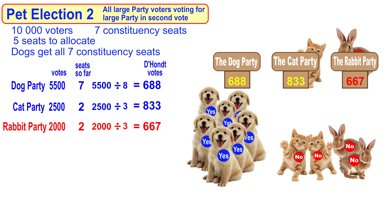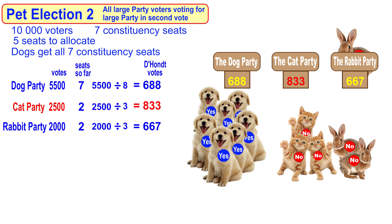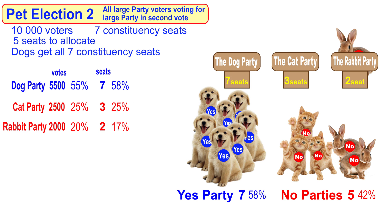The last seat goes to the cat party with the largest vote. Looking at how it worked out: the dog party got 55% of the vote and gained 58% of the seats. The cat party on 25% got its 25%. And the rabbit party got slightly less than 20% and only 17%.